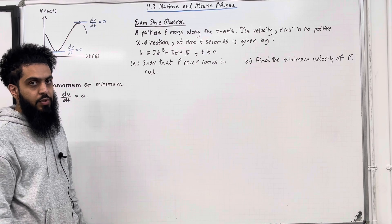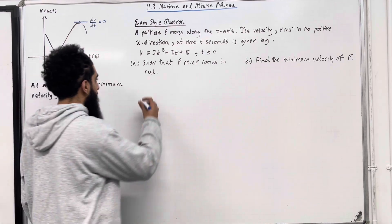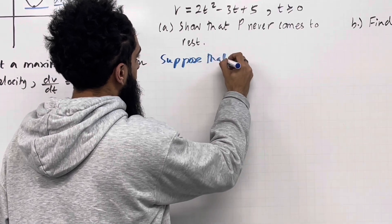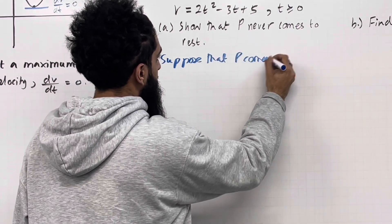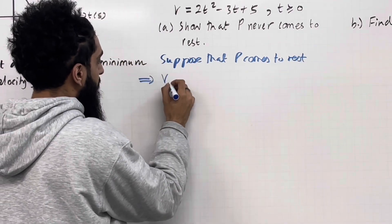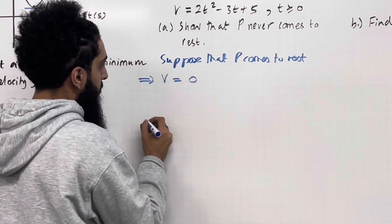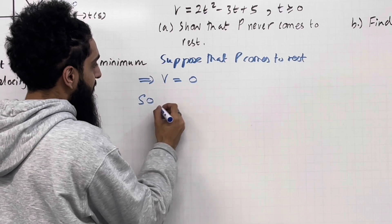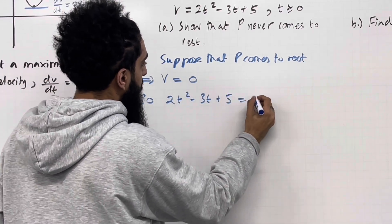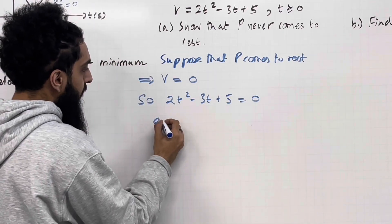Let's have a look at the solution to part A. Now let's suppose that p comes to rest. This implies that the velocity v of the particle p has to equal 0. So we have the quadratic equation 2t² - 3t + 5 = 0.